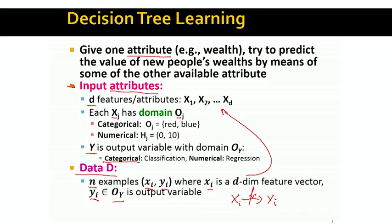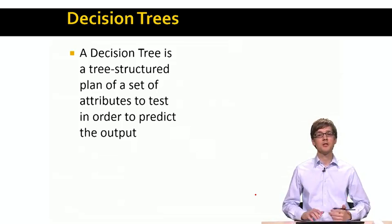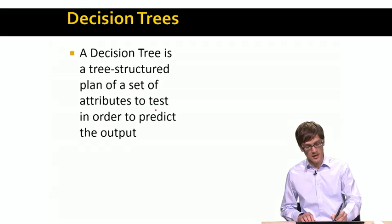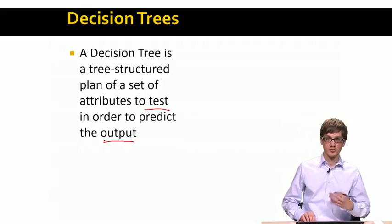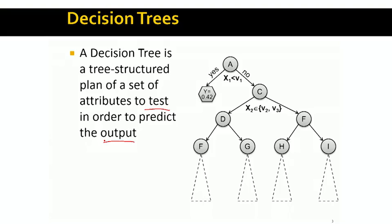So the idea will be that, basically, decision trees is a tree-structured plan that, given a set of variables, it wants to test that set of variables and predict the output. So, to be a bit more concrete, here is an example of a decision tree. A decision tree is a tree hierarchical structure.